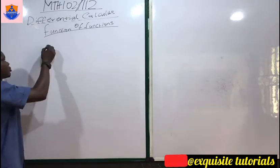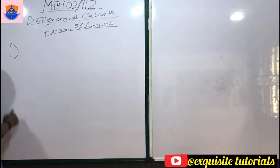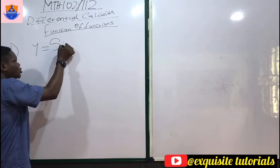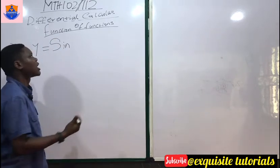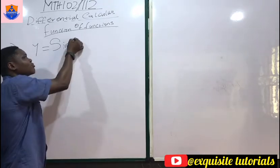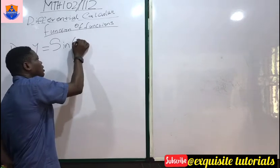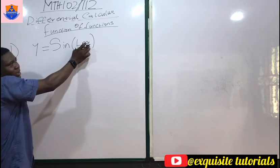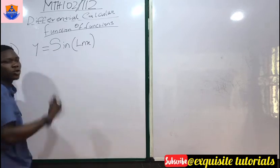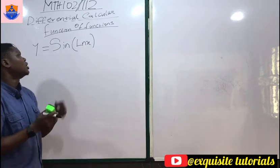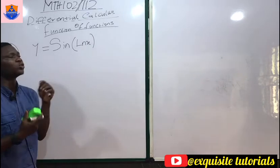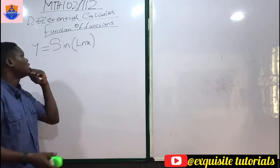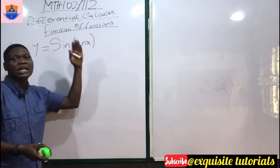Let's say we have a function y equals a trig function, but inside this function we are not just having x or x squared — we are having another function inside, like ln x. So we are basically having a logarithmic function inside a trig function. It's possible to have a trig function inside a logarithmic function, inside an exponential function, or inside a hyperbolic function.